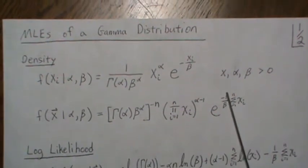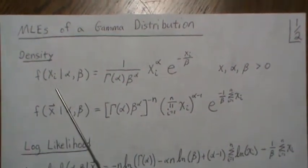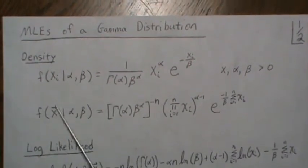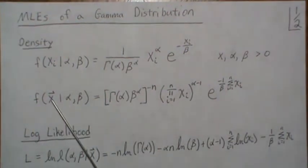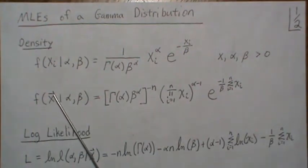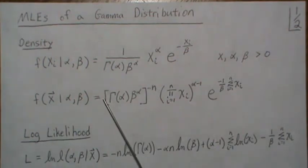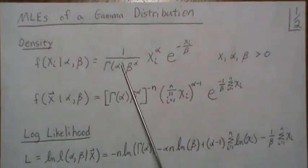x, alpha, and beta are all positive. Now this is for a particular xi, and we want to find the joint density. So this is a vector, all n observations, and since each observation is independent, it's actually the product of all these individual densities.